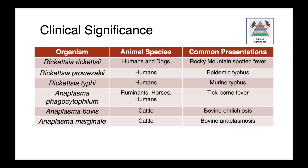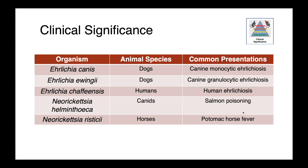There are many diseases associated with these organisms. Rickettsia rickettsii causes Rocky Mountain spotted fever in both people and dogs. Rickettsia prowazekii and Rickettsia typhi cause epidemic typhus and murine typhus, respectively. Anaplasma phagocytophilum causes tick-borne fever in ruminants, horses, and humans. Anaplasma bovis and marginale cause bovine ehrlichiosis and bovine anaplasmosis in cattle. Ehrlichia canis causes canine monocytic ehrlichiosis, Ehrlichia ewingii causes canine granulocytic ehrlichiosis, and Ehrlichia chaffeensis causes human ehrlichiosis. Neorickettsia helminthoeca causes salmon poisoning in dogs, and Neorickettsia risticii is the agent of Potomac horse fever.